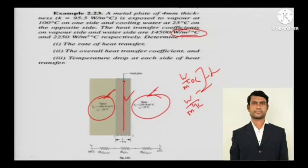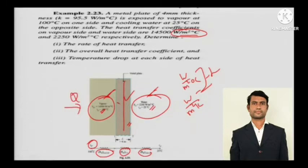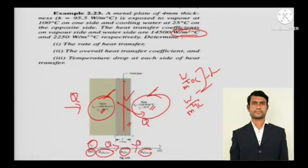The metallic plate is sandwiched between the vapor side and the water side. To build the thermal resistance circuit — analogous to an electrical resistance circuit — the heat first encounters the convective thermal resistance of the vapor side, then the conduction resistance of the metallic plate, and finally the convective thermal resistance of the water side. Heat transfers from 100 degrees Celsius down to 25 degrees Celsius through this series of resistances.